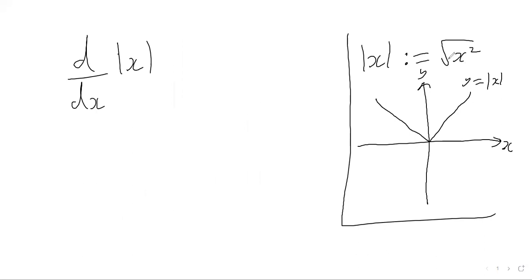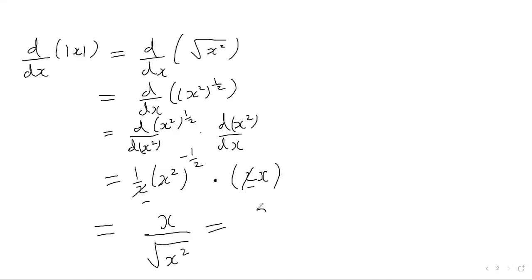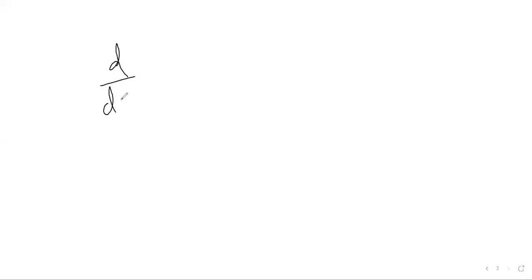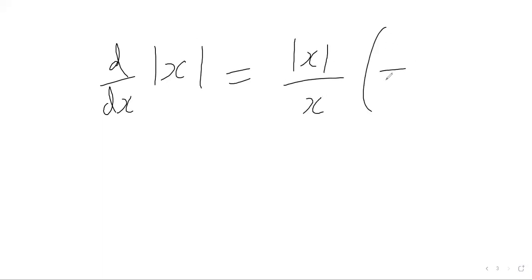We know that the square root of x squared is just defined to be the modulus of x. So in fact we can say that this is equal to x over the modulus of x. And in fact this is also the same as the modulus of x over x — they're just the same thing.